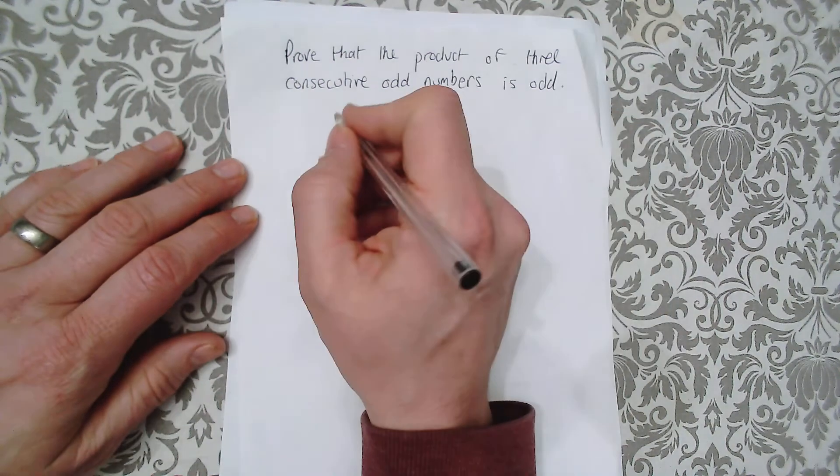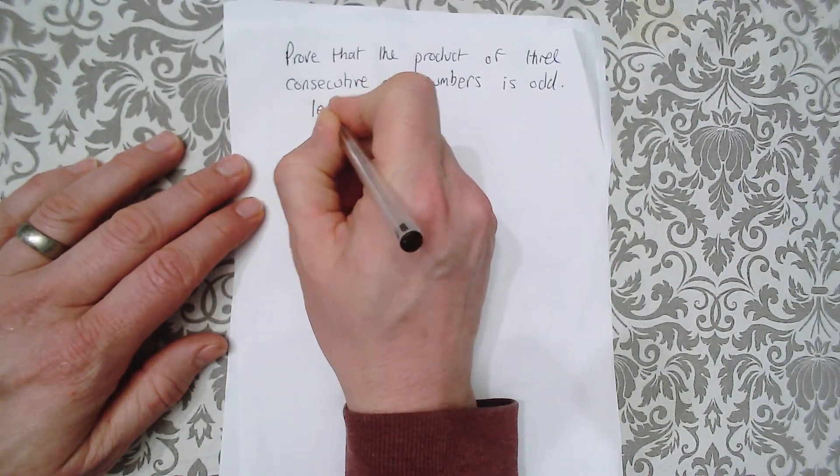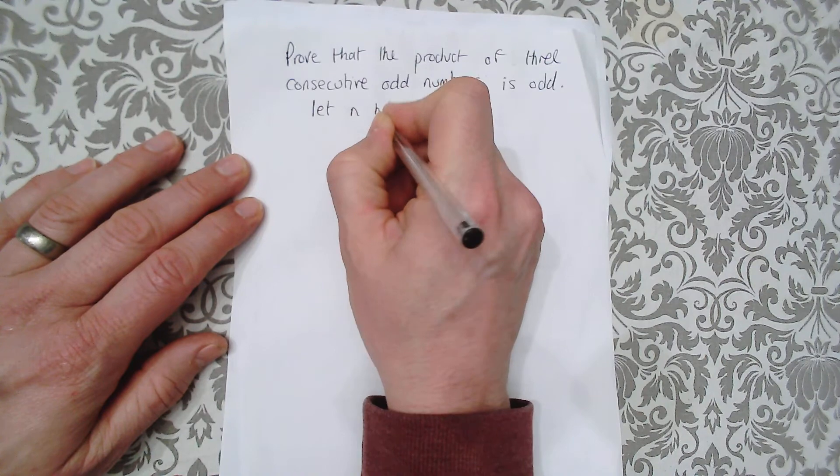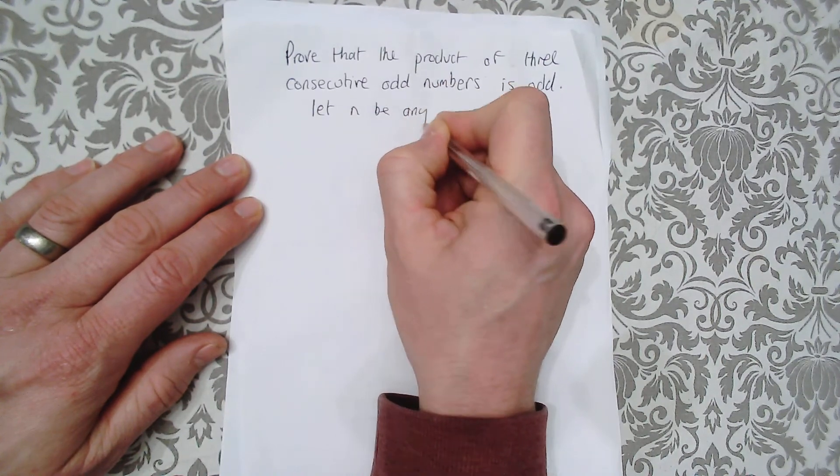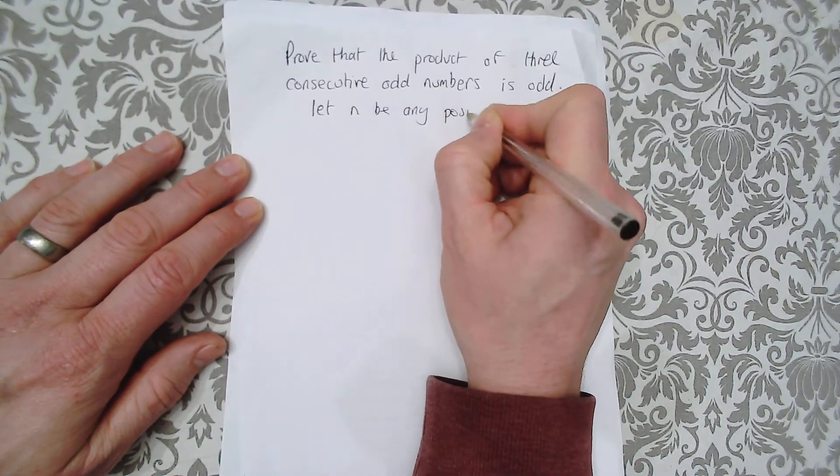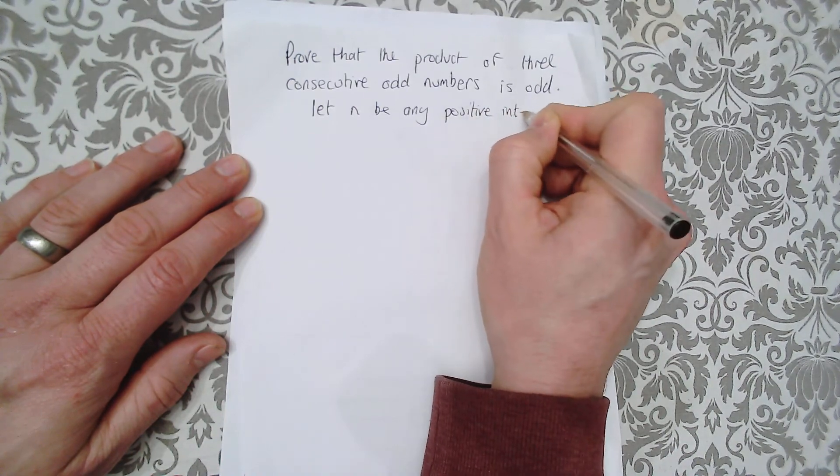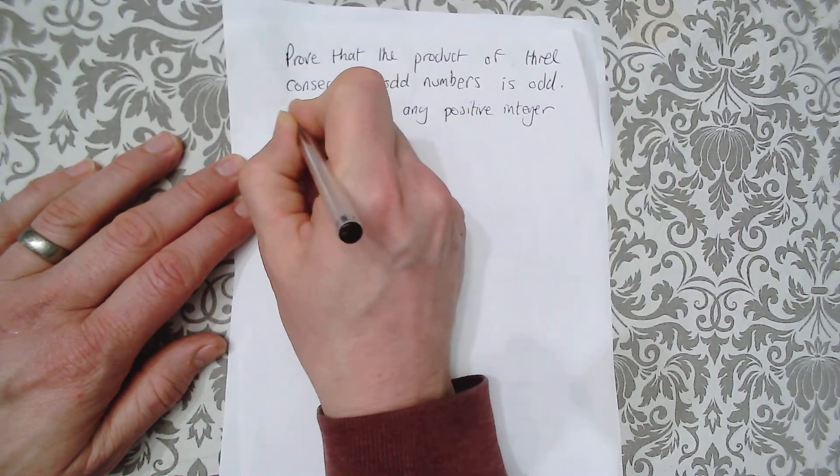Well firstly let's define our three consecutive odd numbers. Let n be any positive integer, i.e. a whole number.